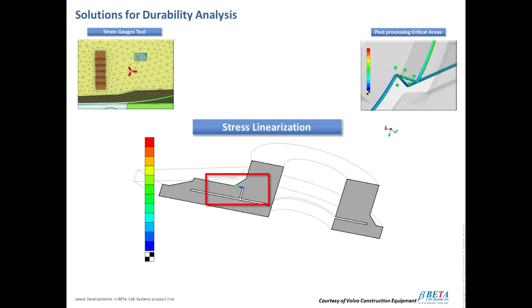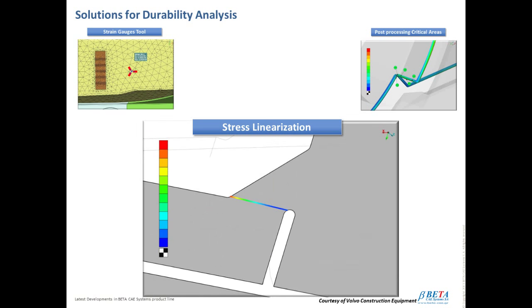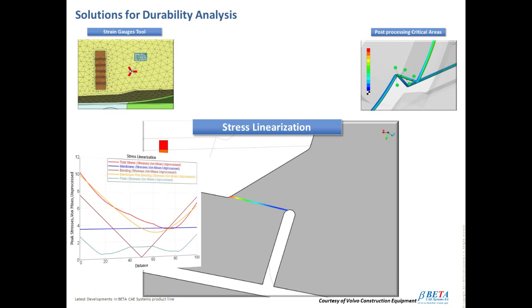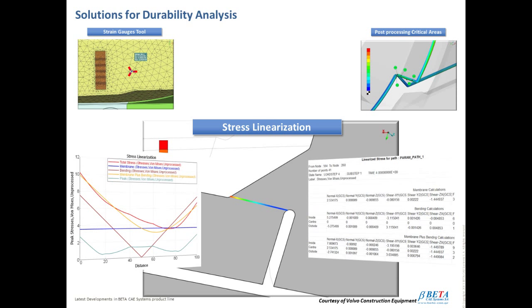Stress linearization can now be easily performed in META via the definition of parametric point paths. After a path or many is created, the user needs to reload the necessary results for specific paths and the calculations are applied. The curves of the membrane bending and peak stresses or a full report in the spreadsheet editor can be created directly.